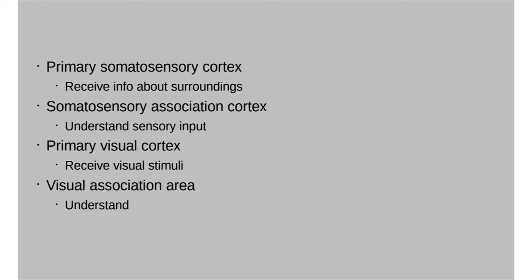Within the primary somatosensory cortex is the primary visual cortex, where information coming in from your eyes arrives — and at this point it doesn't mean anything to your brain. That signal is then passed to your visual association area, where your brain compares it to anything you've seen before so it can decide: that's an elephant, or that's a car. It's the visual association area where you actually know what you're seeing.